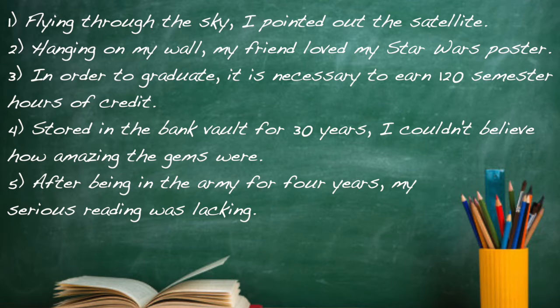In the third one: 'in order to graduate, it is necessary to earn 120 semester hours of credit.' The modifier in this case is 'in order to graduate.' But who or what is graduating? Well, it would be me or you or students or somebody. But this example makes it seem like 'it' is graduating, and 'it' is not a thing that can be graduating. So again, you'd have to add in a person or a student or something like that.